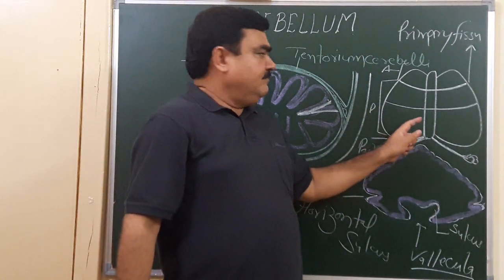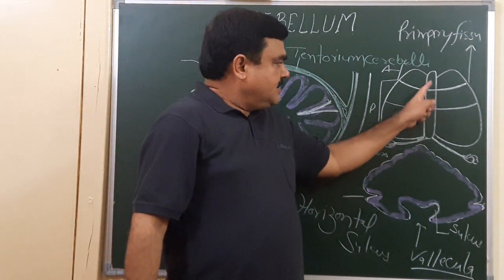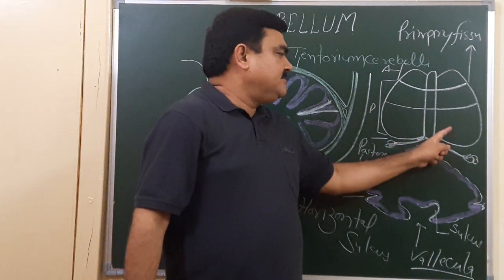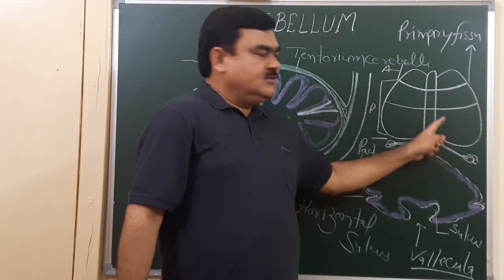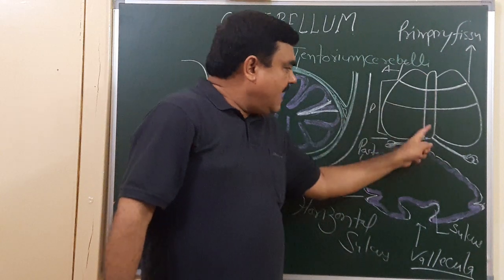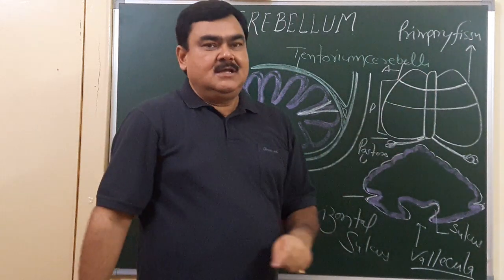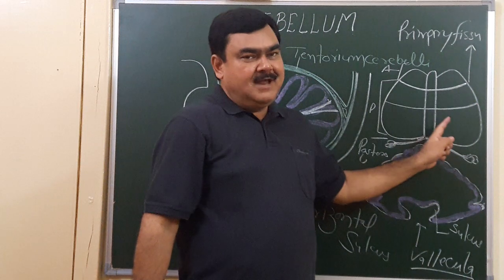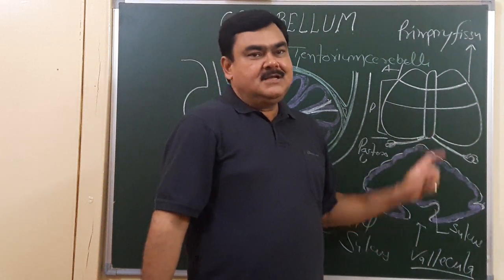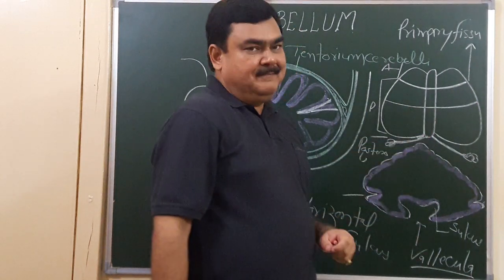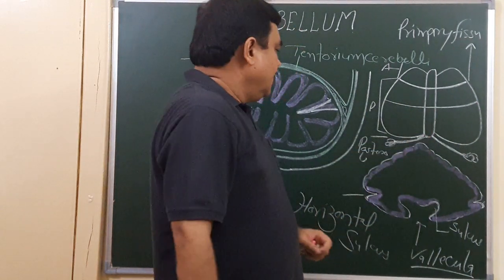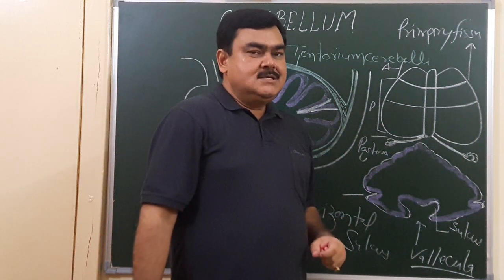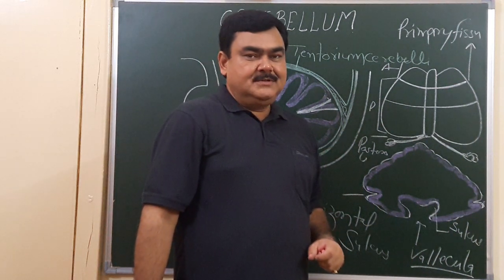It has a central part called the vermis — it is a worm-like structure, so it is known as vermis — and the two hemispheres, right and left, which are part of the cerebellum. So this is the external feature of the cerebellum. Thank you.